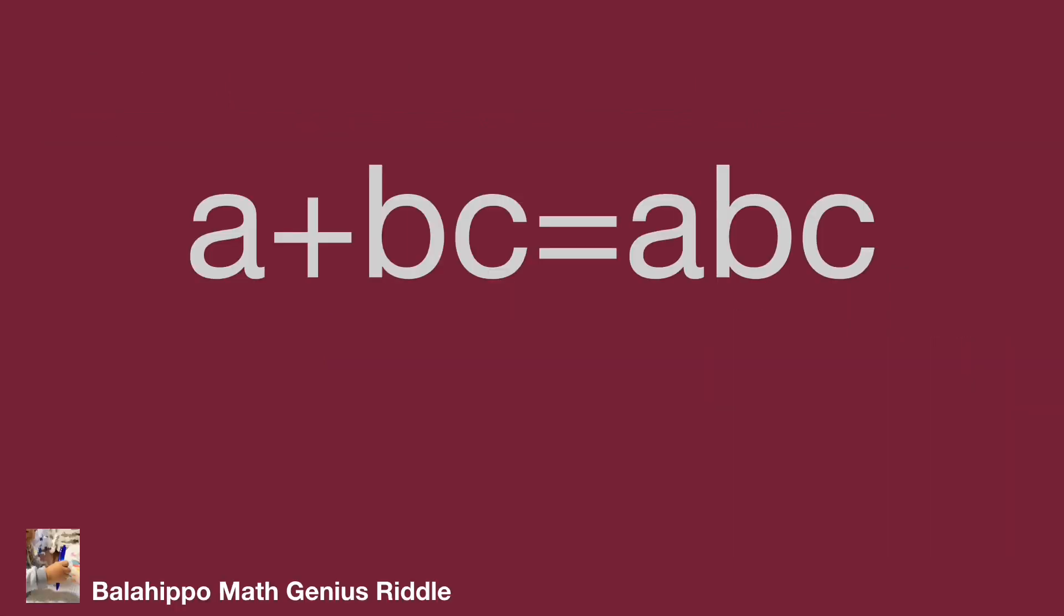We have a simple and interesting given information: A plus BC equals ABC. The condition is A, B, C not equal to zero and A, B, C are integers. In this given information, there are three unknowns A, B, C in the equation. And then we find if we treat BC as one item, then we reduce the unknown numbers. A, B, C are integers, so BC is integer too. For easy understanding, let BC equal to K where K is also an integer.